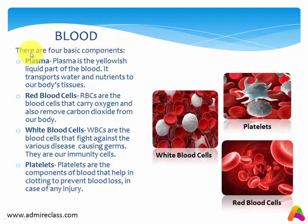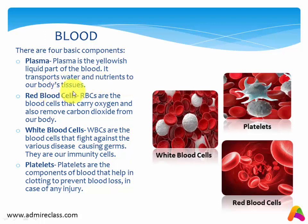Now the next one is blood. There are four basic components of blood. Number one is plasma. Plasma is the yellowish liquid part of the blood. It transports water and nutrients to our body's tissues. So plasma is yellowish in color, is the liquid part of blood, and its work is to transport water and nutrients to our body's tissues.